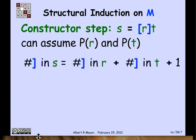So let's look at the number of right brackets in S. The right brackets in S consist of - the first symbol in S is a left bracket, so that doesn't matter. Then it's the right brackets in R. And then there is a new right bracket that gets added. And then there are the right brackets in T. So the number of right brackets in S is the sum of the number in R plus the number in T plus one more because the constructor threw in one more right bracket.